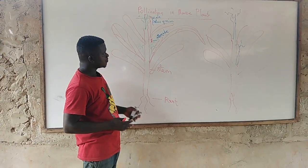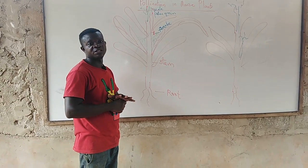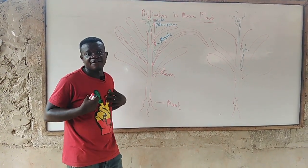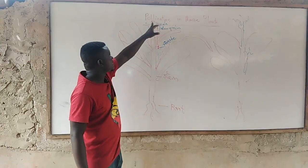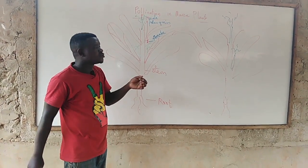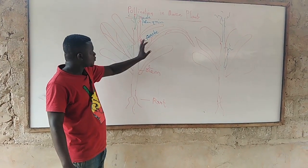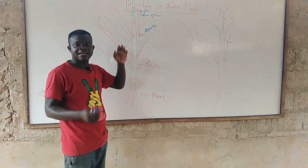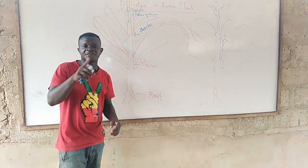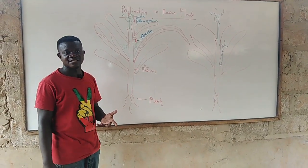For cross pollination through artificial means, you as the farmer can easily get the pollen from the male part using a simple tool — you scrape it and then pour it on the female part, and fertilization takes place. Now let's go to the field and watch how natural pollination occurs in maize.